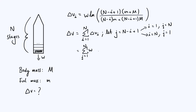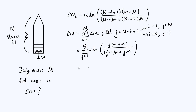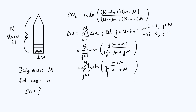Substituting j, the numerator of the log becomes j(m plus M) and the denominator becomes (j minus 1) m plus j M — which already looks much simpler. I'll reintroduce a nested fraction by dividing top and bottom by j, giving a numerator of m plus M and a denominator of M plus (j minus 1 over j) times little m. That's the nicest form to leave this in.